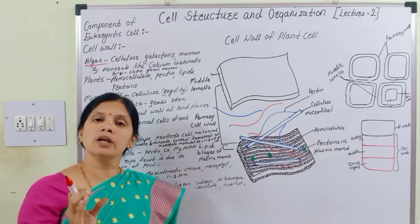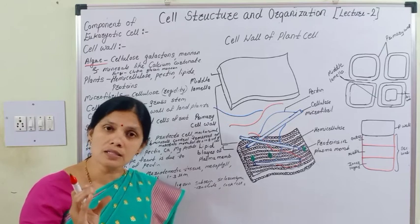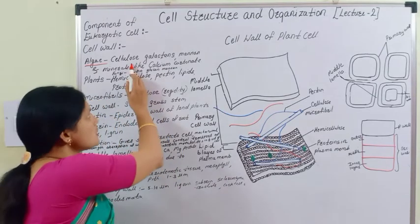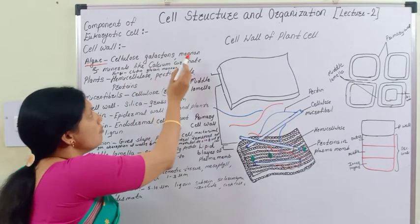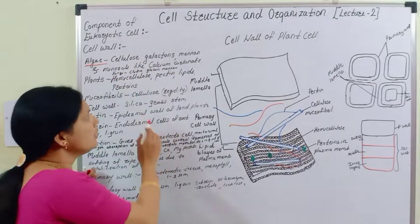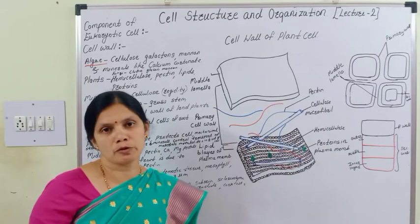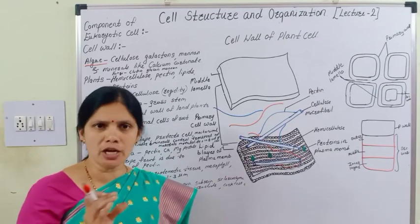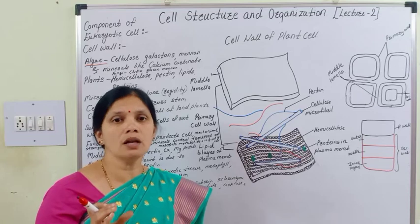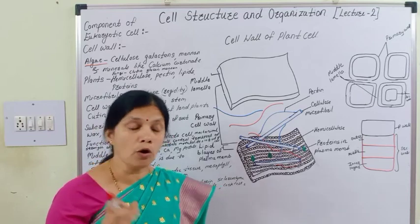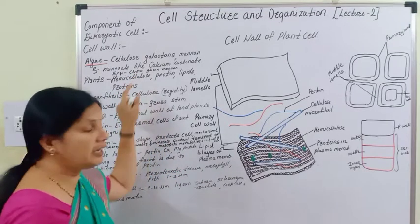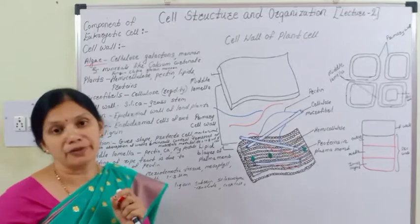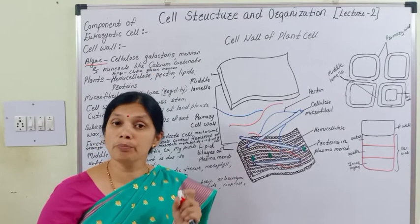If you observe the fungi cell, then the fungi cell wall is formed from chitin, glucan, and manan. Manan is one of the proteins.